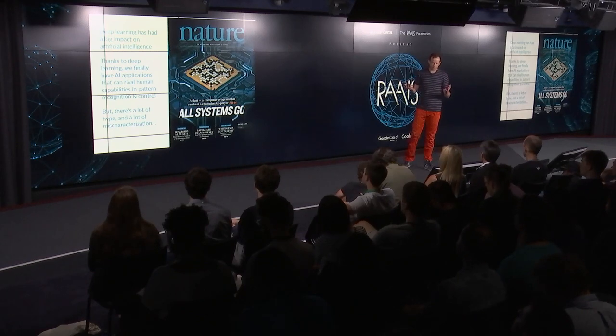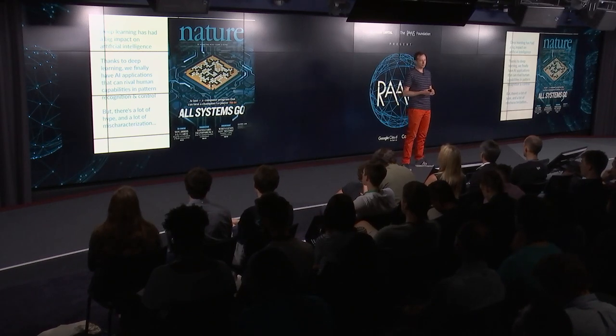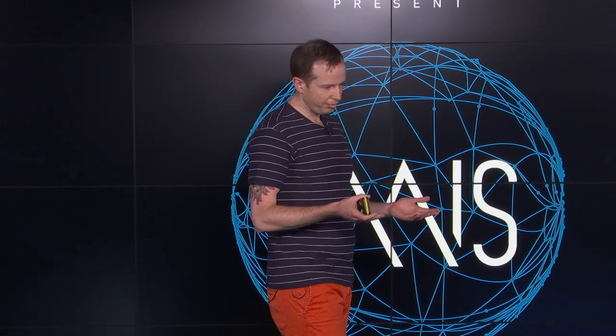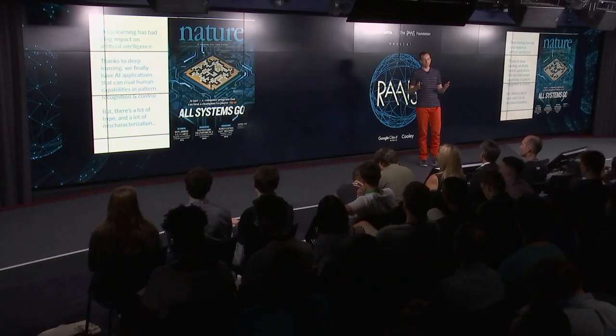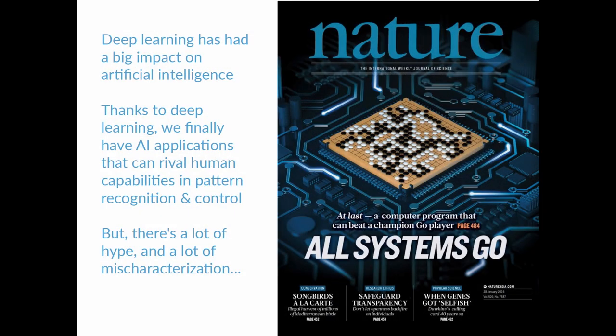Now, as you know, deep learning has had a big impact on artificial intelligence. And we finally have the ability to rival humans in pattern recognition and control. I agree with Francois' characterization of most of the deep learning systems that exist today as basically being pattern recognition. And there's a lot of hype and a lot of mischaracterization. The impressive things we've achieved are often over-exaggerated in the media, and the relationship to the brain is also overly simplified.